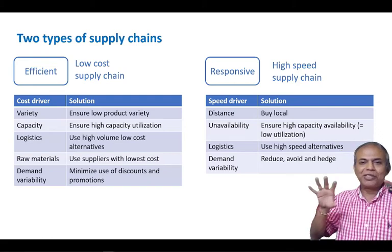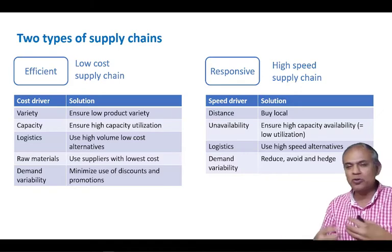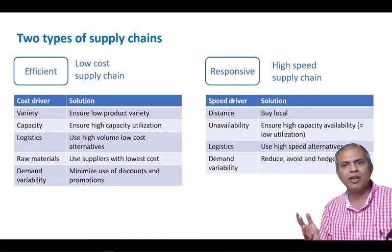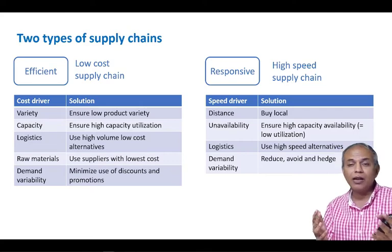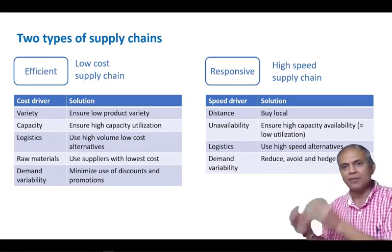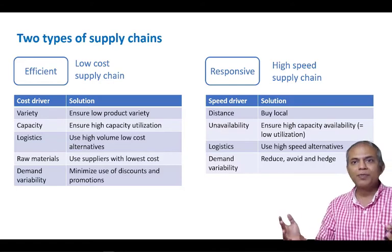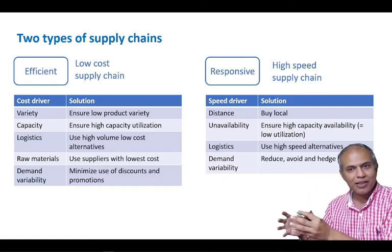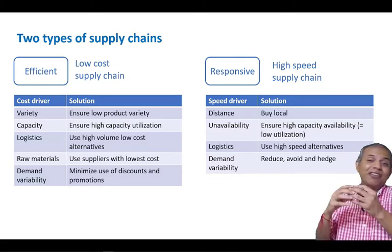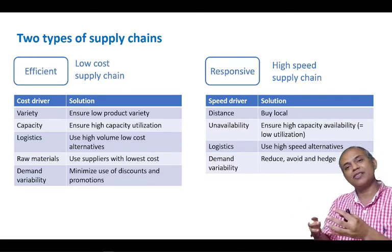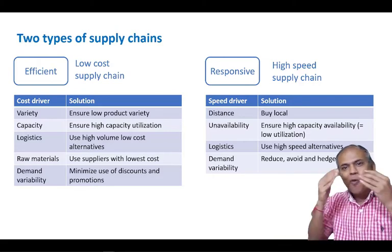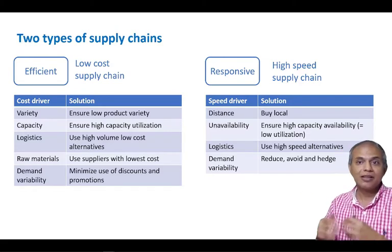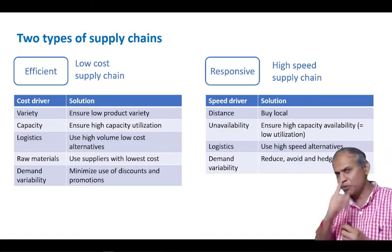This brings us to two principles. Principle number one: what is a good supply chain? A good supply chain is one which satisfies the needs of the product. If you have a functional product, a good supply chain is a low-cost supply chain. If you have an innovative product, a good supply chain is a responsive supply chain. There is no single definition of a good supply chain — it depends on the kind of product the company has.